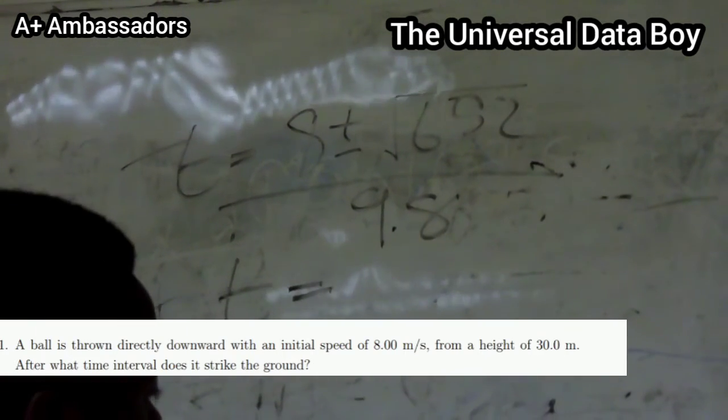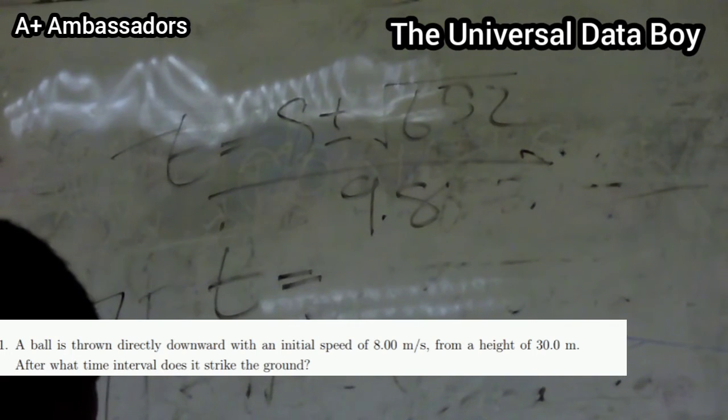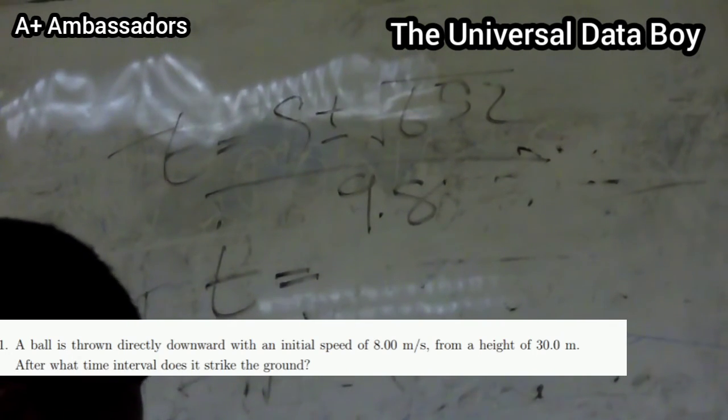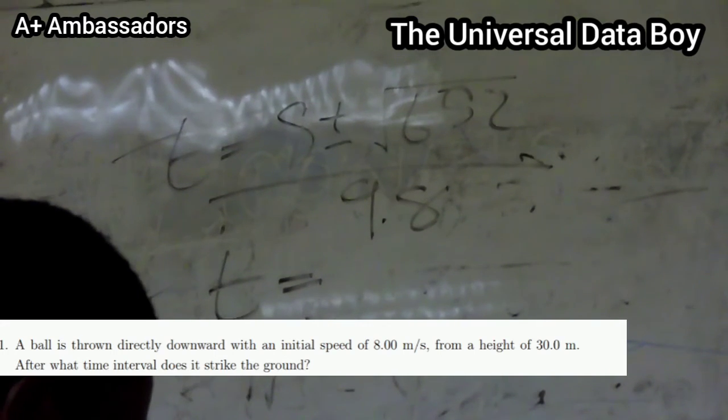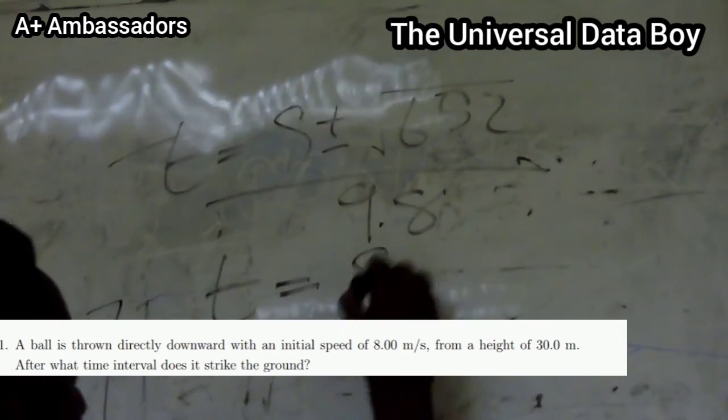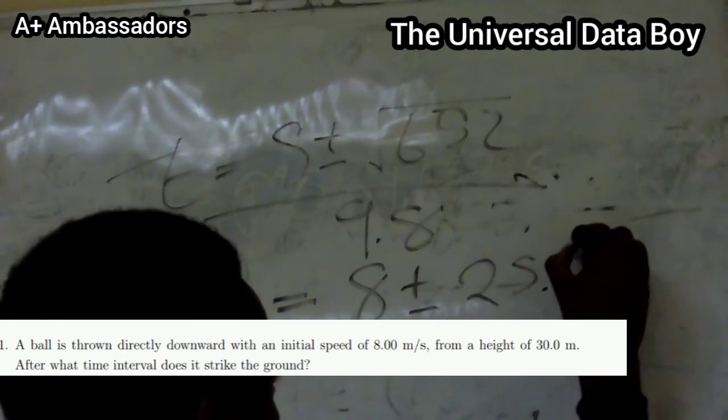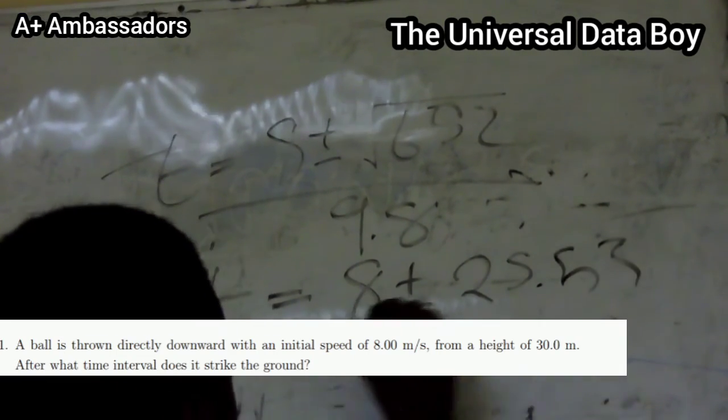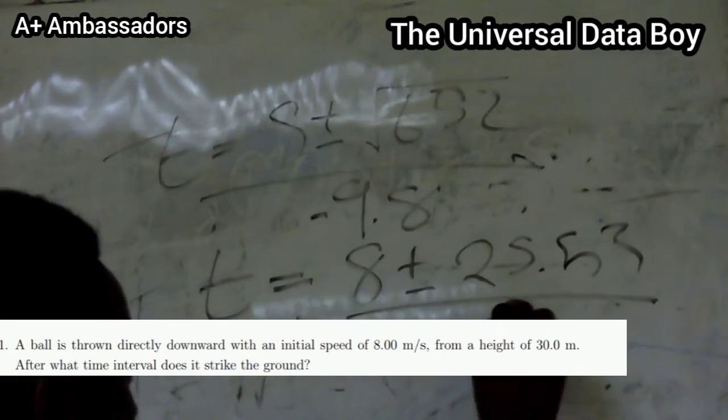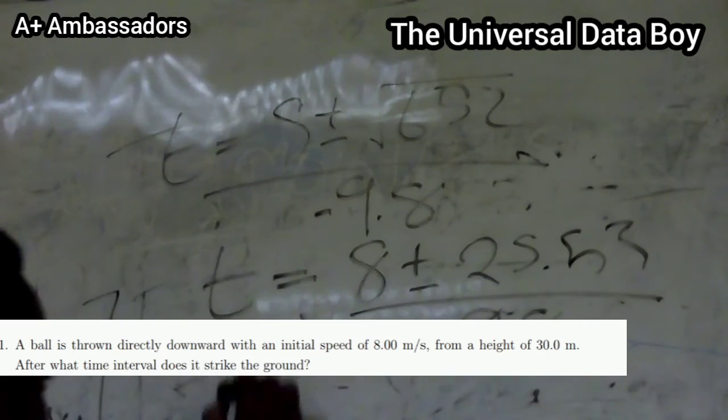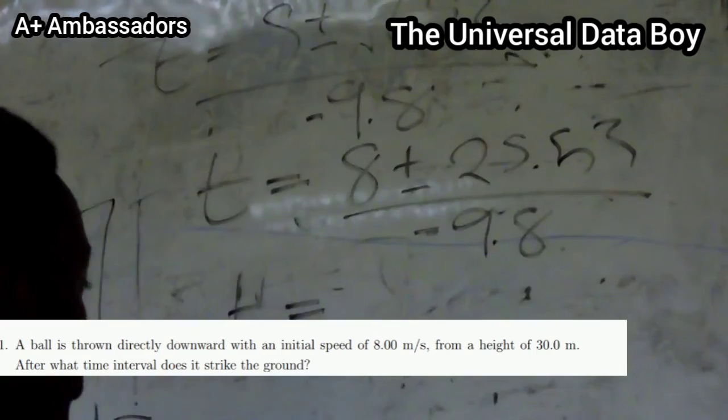Let's find the square root first. The square root of 652 is 25.53.